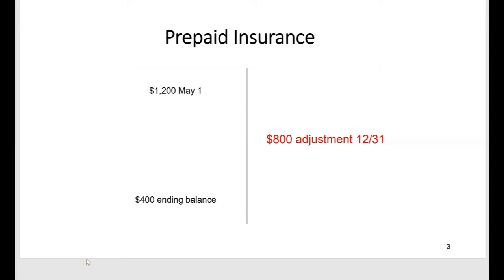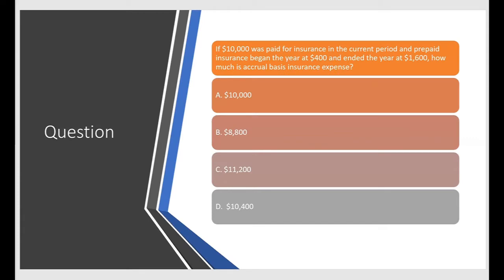What they're likely to do with prepaid expenses is tell you how much was paid during the year and you'll have to determine how much was incurred. So let's take a look at a question like that. If $10,000 was paid for insurance in the current period and prepaid insurance began the year at $400 and ended the year at $1,600, how much is accrual basis insurance expense?